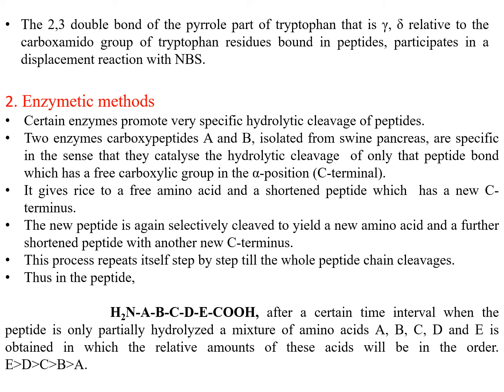The new peptide is again selectively cleaved to yield a new amino acid and a further shortened peptide with another new C-terminal. This process repeats step by step until the whole peptide chain is cleaved. In the peptide NH2-A-B-C-D-E-COOH, where A through E represent different amino acids, after a certain time interval when the peptide is only partially hydrolyzed, a mixture of amino acids is obtained in which the relative amounts follow the order: E > D > C > B.